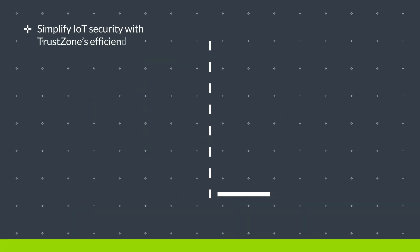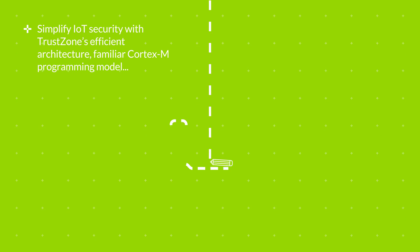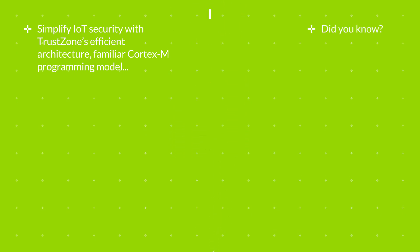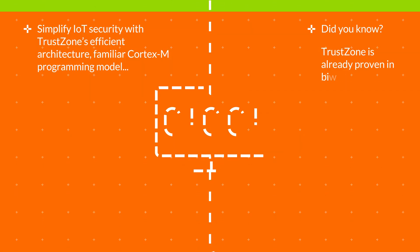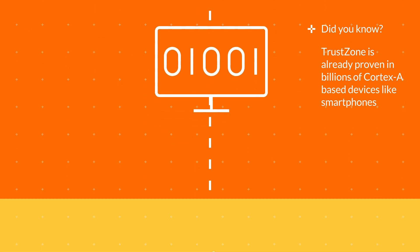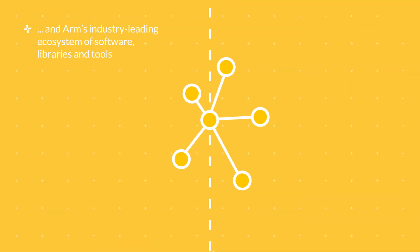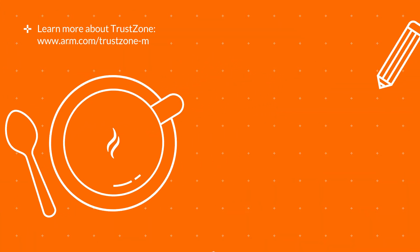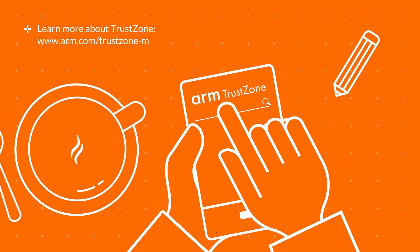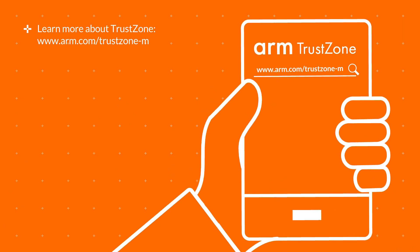Simplify IoT security with TrustZone's efficient architecture, familiar Cortex-M programming model, and industry-leading ecosystem of software, libraries and tools. Learn more about ARM TrustZone technology at www.arm.com/TrustZone-M.